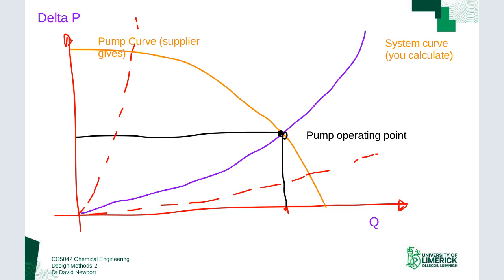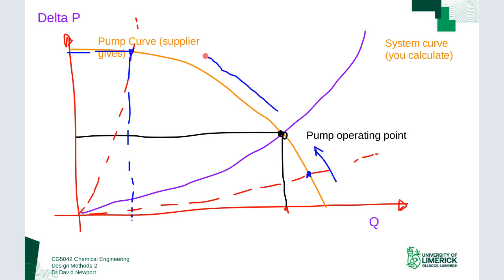If we had a high-pressure system, our operating point would be higher up — much harder to push the fluid through, giving a higher pressure drop and much lower flow rate. For the low-pressure system, the operating point shifts down. So you shift depending on the system — you move along the pump curve as the system changes, and that intersection point moves through various locations.